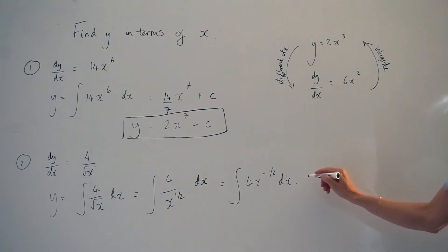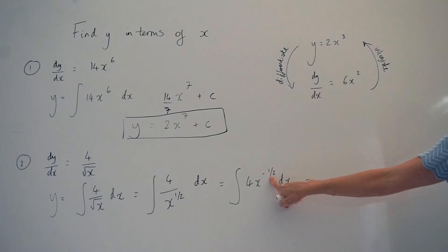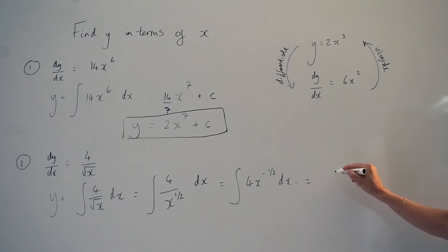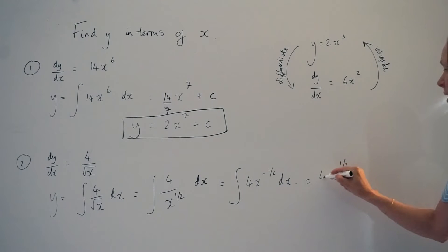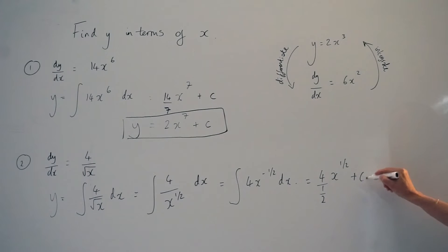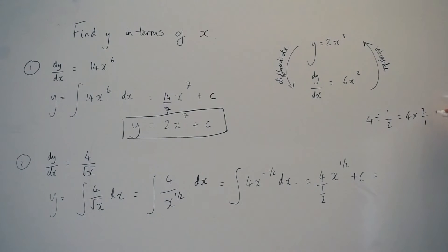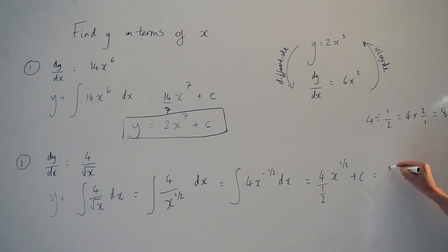Now I can integrate. Remember, you're raising the power by 1. So if I add 1 to negative a half, I get positive a half. So we have x to the positive half. And then we're dividing this number 4 by the new power, which is a half. And remember to add your constant c. Then you just have to simplify. So 4 divided by a half — that's the same thing as 4 multiplied by 2 over 1, which is 8. Or you could say, how many halves are in 4? There are 8. So the answer is 8x to the half plus c.